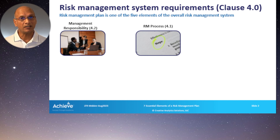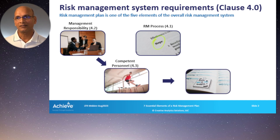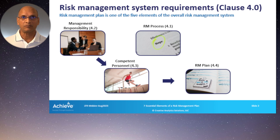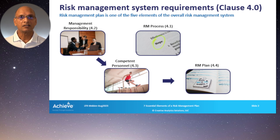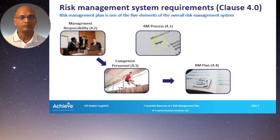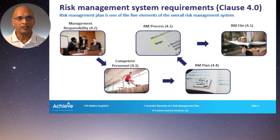Before the process can start, we need management responsibility to be clearly defined — that's in clause 4.2. They will assign competent personnel who would set up the risk management plan. All those pieces have to be in place first. The risk management plan is very focused and targeted for the particular product you are working with, or a family of products — it doesn't have to be only one product. It can be a family of products if they are sufficiently similar in their intended use and technological characteristics. Once you execute your process, the output of that process is the risk management file.